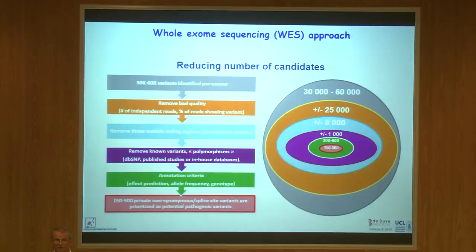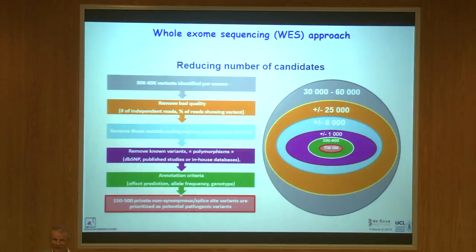We still have up to 500 variants, but perhaps only one is truly linked to disease pathogenesis. We therefore want several individuals, and if many of them have changes in exactly the same gene, we think that gene may be the cause of the disease. We then carry out functional studies in cells and in animal models to prove that those changes alter protein function and are able to cause the disease.